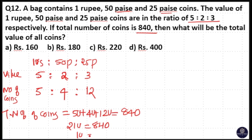That means 12 plus 9 equals 21 units is equal to 840. Then 1 unit will be 840 divided by 21, that is equal to 40. So, 1 unit is equal to 40.